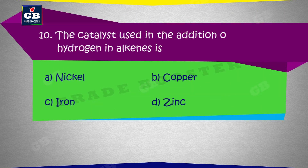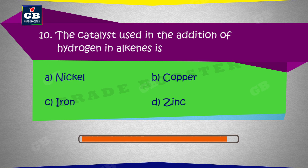The catalyst used in the addition of hydrogen in alkenes — alkenes mein hydrogen ke addition mein istemal kiya jaane wala catalyst hai: a) Nickel, b) Copper, c) Iron, d) Zinc.